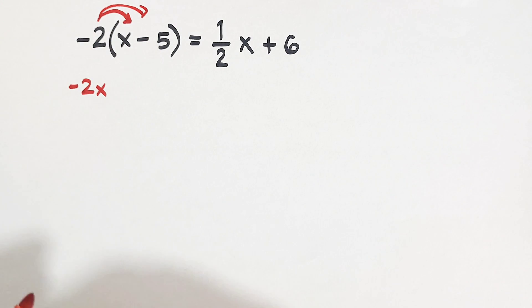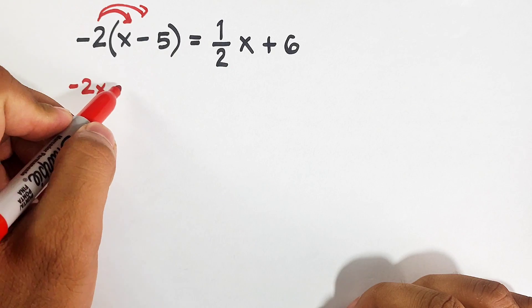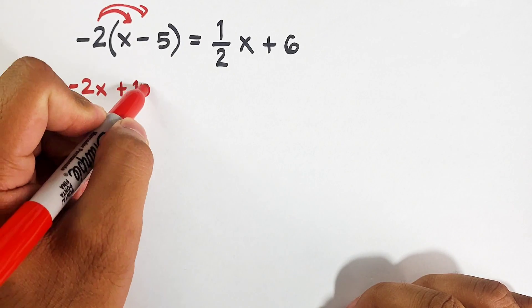Negative 2 times negative 5. If you are confused about multiplying integers, if you have the same sign of integers, let's say for example positive and positive, or negative and negative, automatically your product or the answer is positive. So this is plus 10.